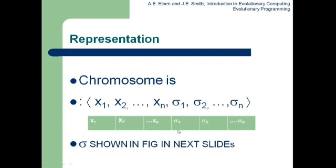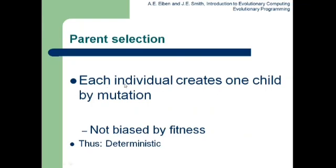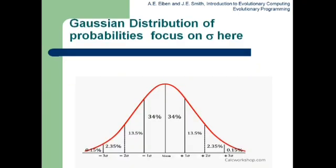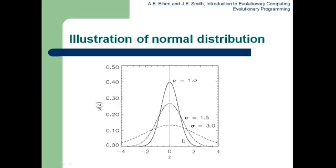The representation is x1, x2, ..., xn along with sigma, the standard deviation to be added to each xi. For parent selection, each individual will create one child — it is not biased by fitness, so even if the fitness is low, the parent will still create one child. The Gaussian distribution of probabilities is used to generate children. Here, the mean is zero and one standard deviation is shown. If the value of standard deviation changes, the shape of the curve changes accordingly.